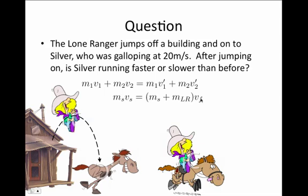If we're given the mass of the two things and the initial speed, then we can solve for v final. And that becomes the ratio of Silver's mass over Silver plus Lone Ranger's mass times the initial speed of Silver.